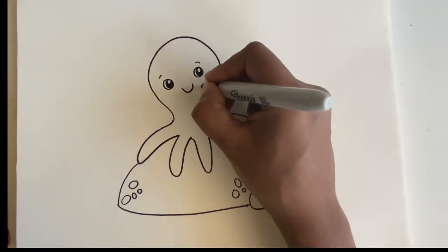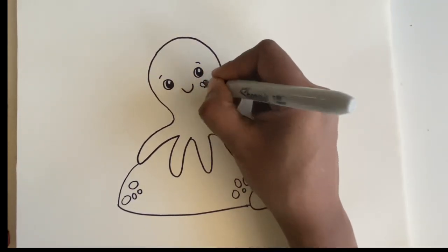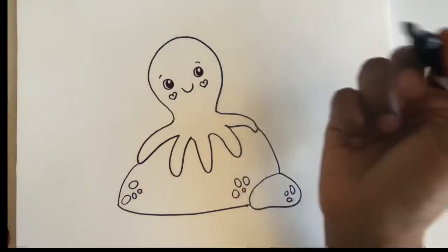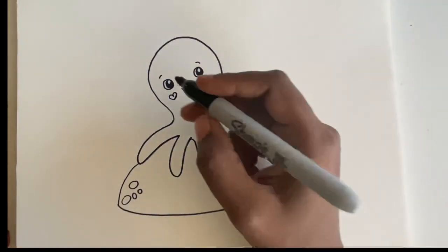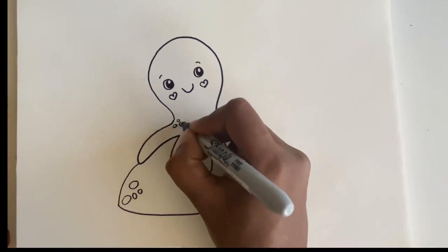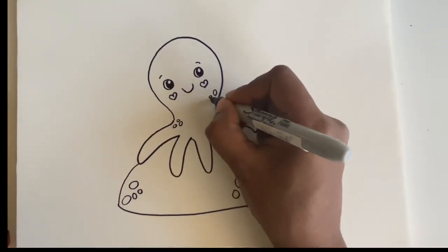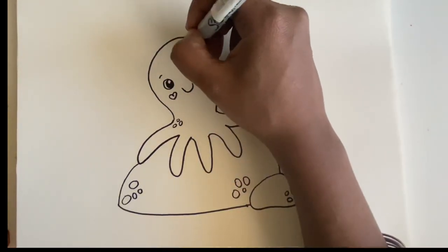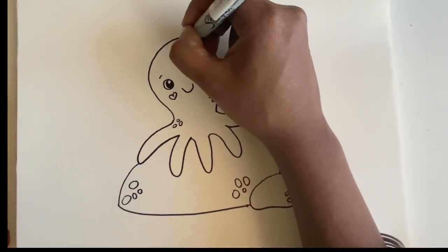Eyebrows - you can even add eyelashes if you like. Some details on his cheek makes him look really, really cute. Just adding more details, just little spots on him.